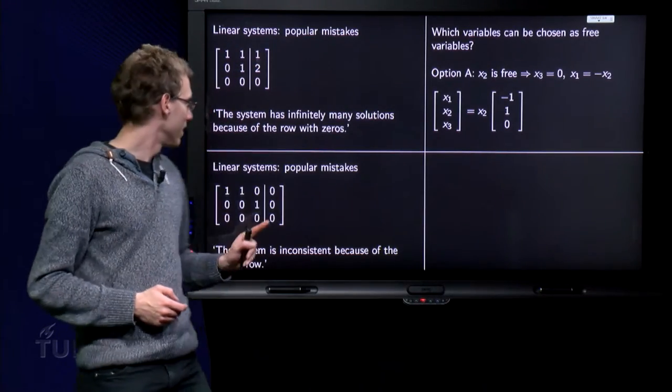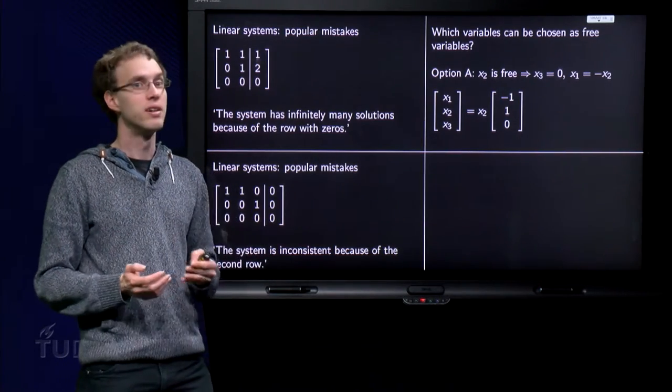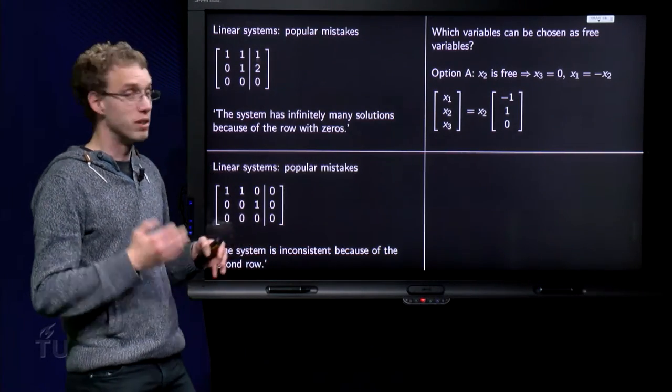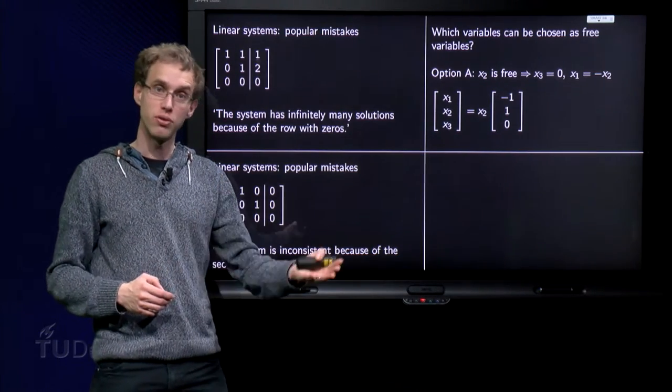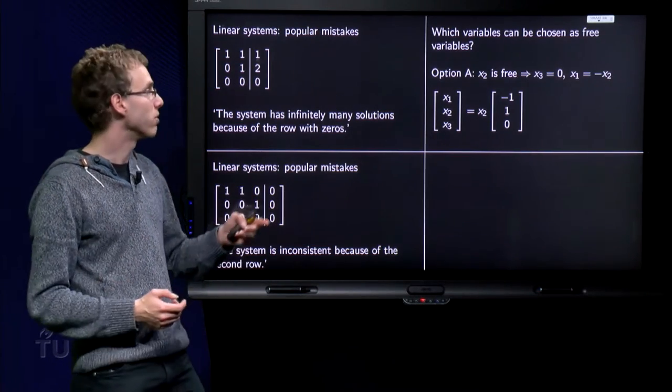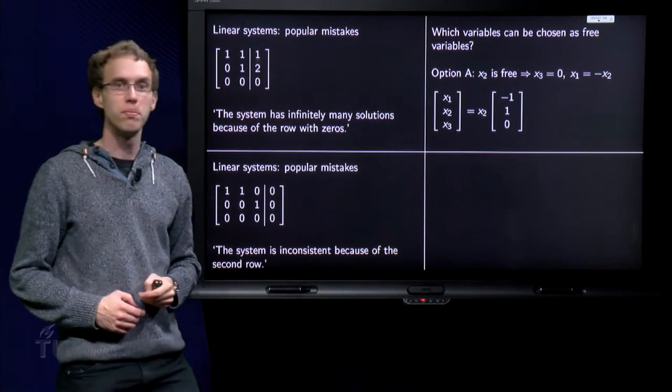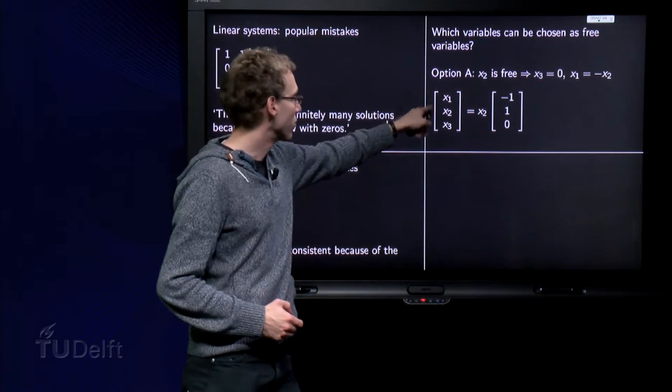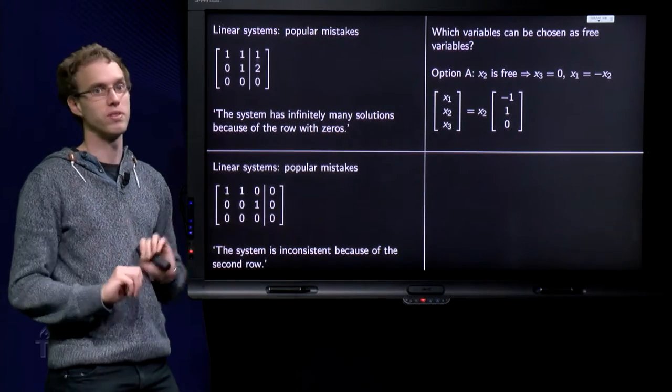So let's take a look. Well, option A, x2 does not have a pivot, so we can take x2 to be free. That's always fine. Because if we continue to solve the system, the second row will give us x3 equals 0, so the first row will give us x1 plus x2 equals 0, so x1 equals minus x2, and if we put it in the parametric vector form, we get x1, x2, x3 equals x2 times minus 1, 1, 0. So that's okay, totally fine.